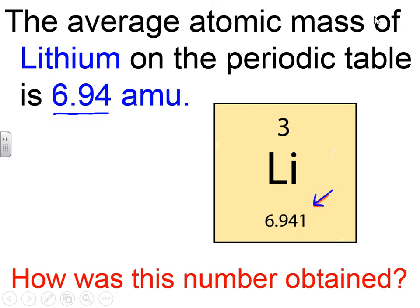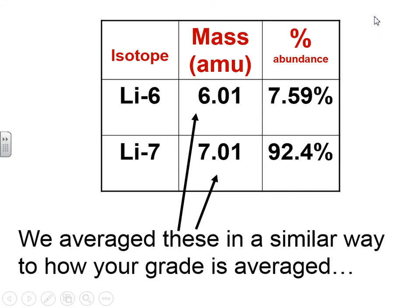The answer is summarized in this table. We're going to average the two masses — the lithium-6 mass and the lithium-7 mass. If we just averaged them directly, we simply add 6 and 7 and divide by 2, we'd get roughly 6.5. However, the average mass of lithium is not 6.5 — it's more like 6.9. So this is not a straight average; this is not how we're going to do it.